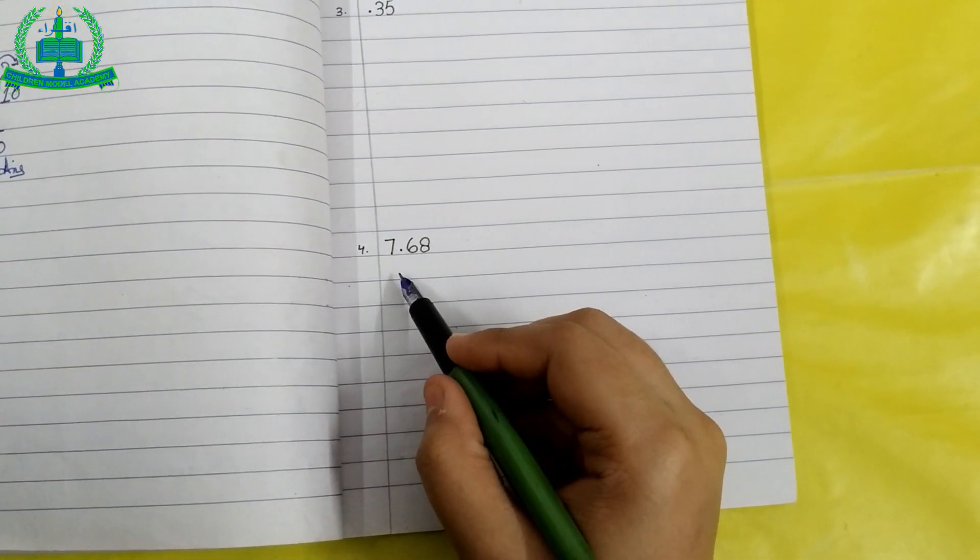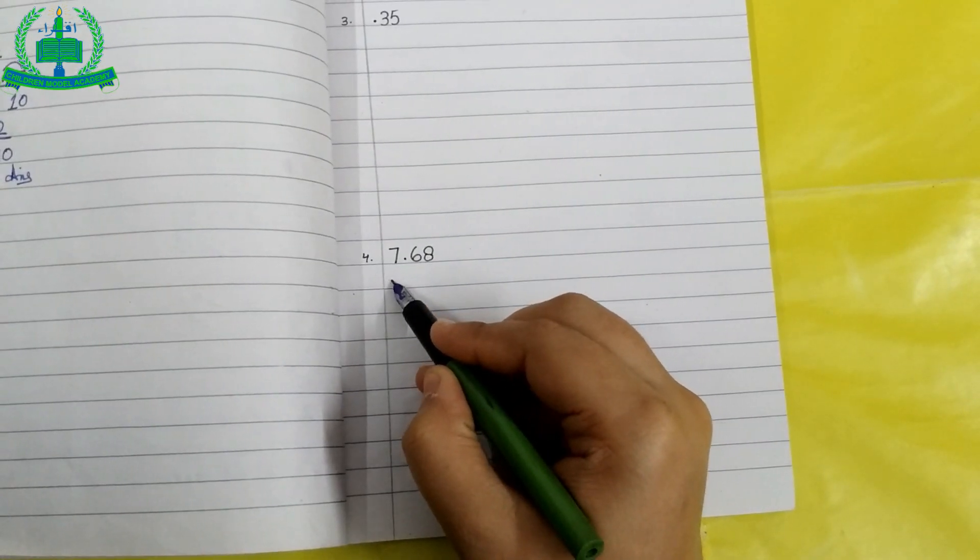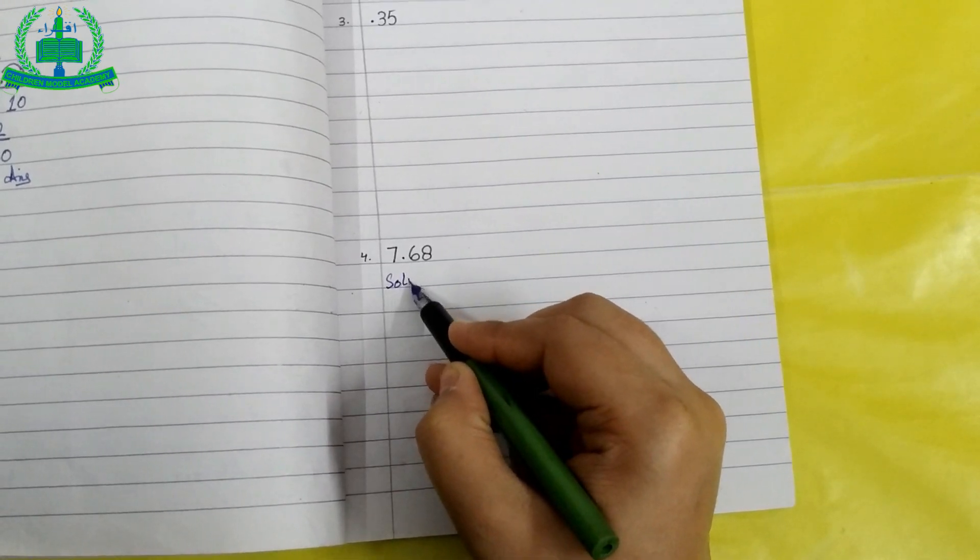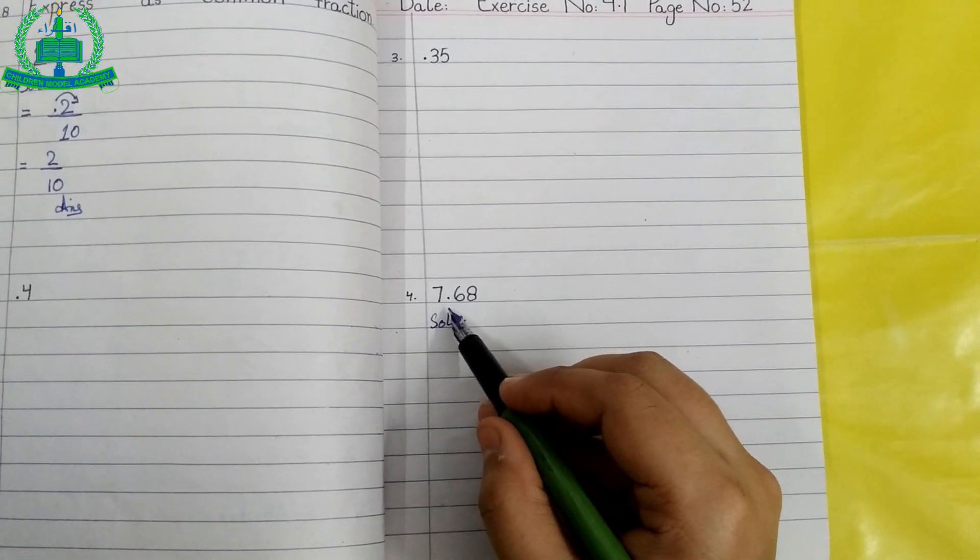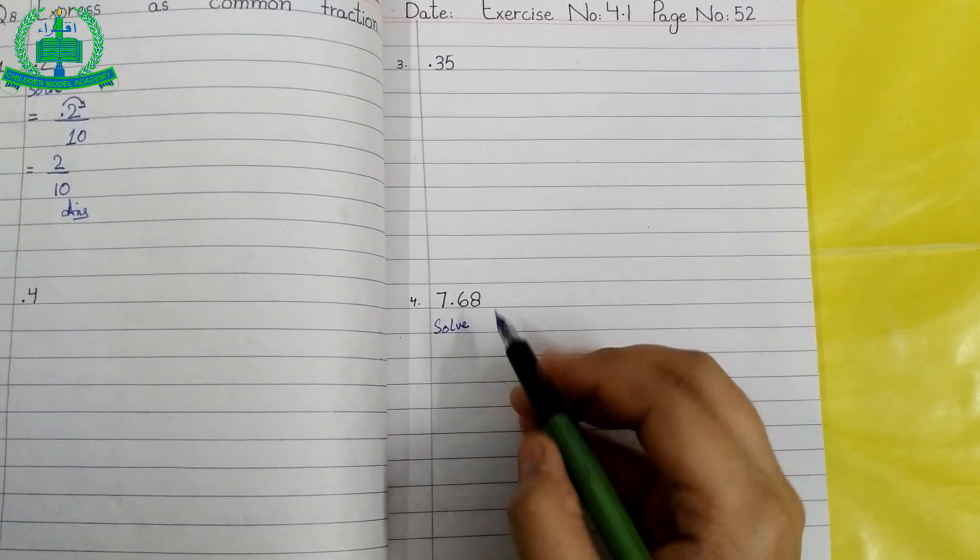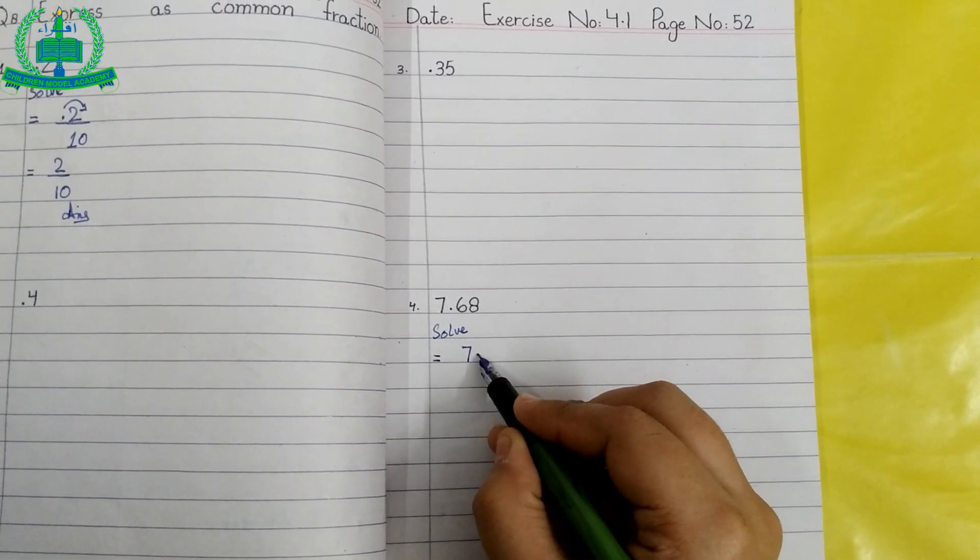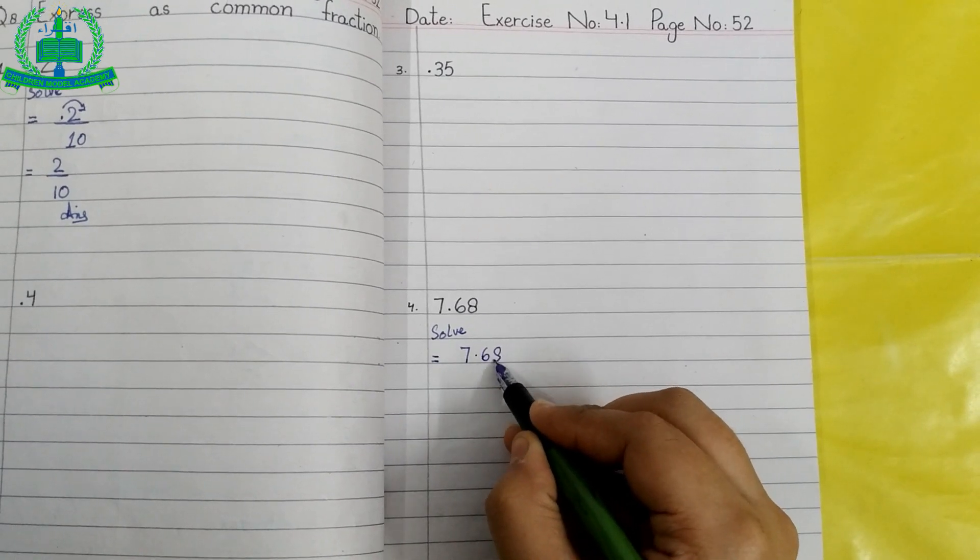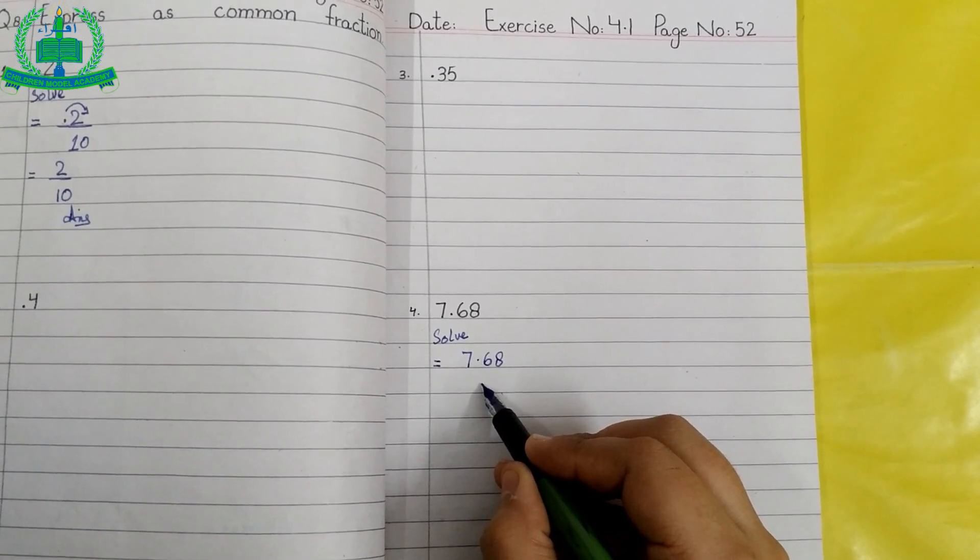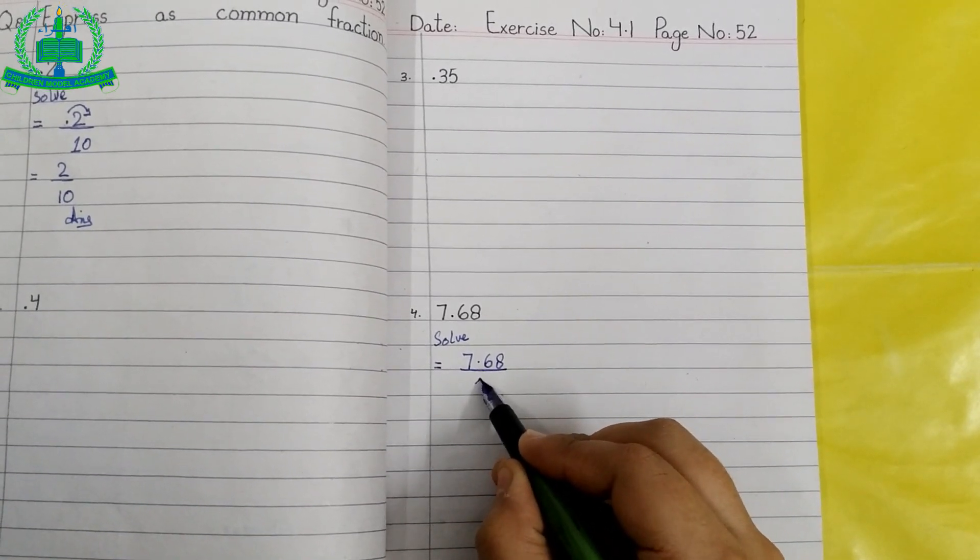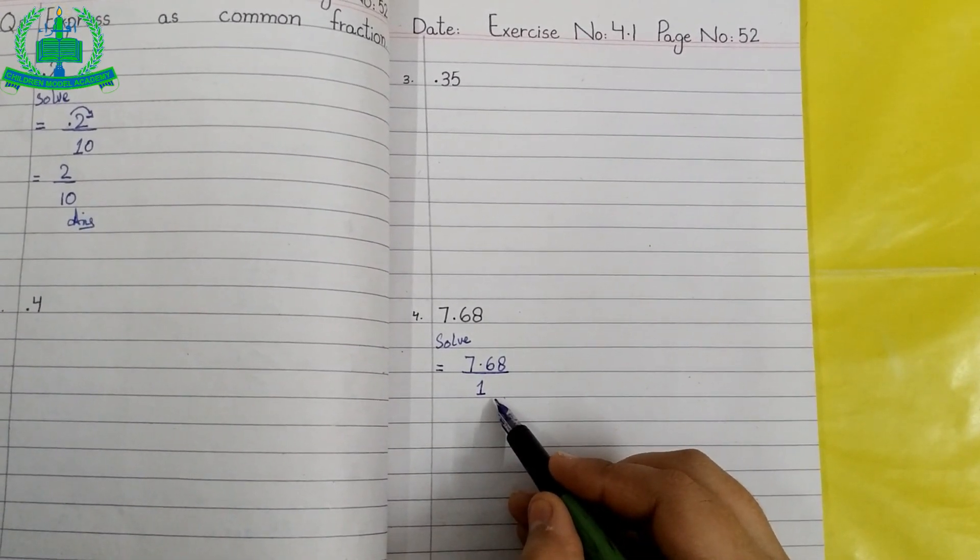Now I will explain question number 4: 7.68. Give heading or solve. We write equals sign, again we write 7.68. If there is no denominator below any number, we suppose 1 as denominator in fractions. Point moves on right hand side.